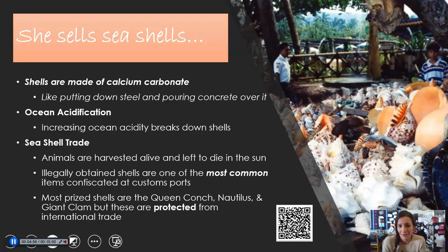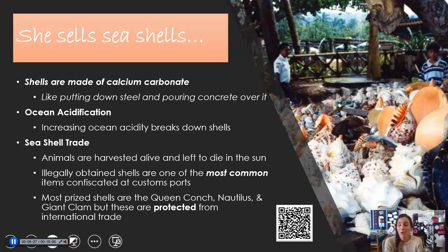And then lastly, the seashell trade. When animals are harvested for their shells, it's not like finding a shell with no animal in it. Many of these shells are harvested with live animals in them, then taken ashore and put out in the sun to dry out until the animal dies, then cleaned and treated with oil and chemicals to make them look shiny. Also, fun fact: one of the most common things confiscated at U.S. custom ports are actually illegally obtained shells, and the most prized ones are also protected. There's a QR code you can scan to read more about this.